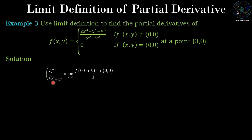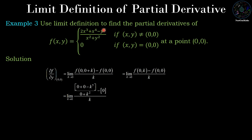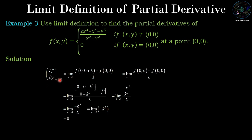Now for ∂f/∂y at (0,0): limit k→0 of [f(0, k) − f(0,0)] / k. We compute f(0, k) by replacing x by 0 and y by k: (0 + 0 − k⁵) / (0 + k²) = −k⁵ / k² = −k³. So we have −k³ / k = −k². Taking the limit k→0 of −k² = 0. Therefore ∂f/∂y at (0,0) = 0.